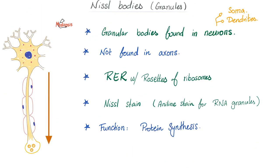Nissl bodies or Nissl granules are granular bodies found in neurons — specifically in the dendrites and cell body, but not in the axon or axon hillock. A Nissl body is essentially rough endoplasmic reticulum with ribosomes. In neuropathology, when discussing brain tumors, formations are described as rosettes or pseudo-rosettes, because the RER produces these structures.